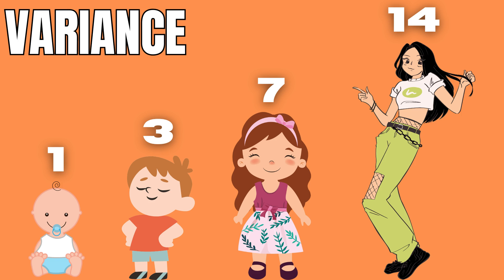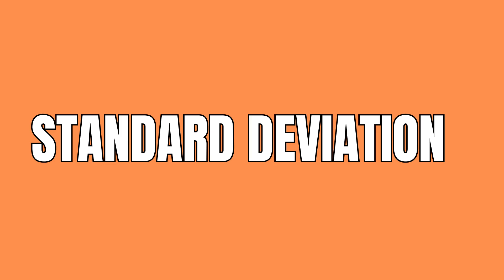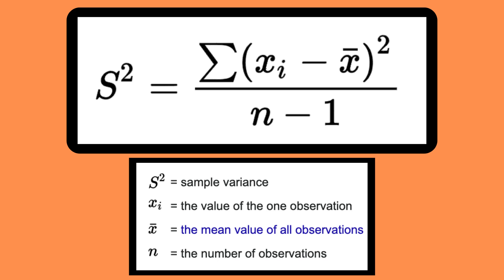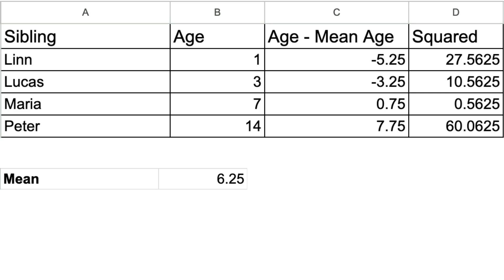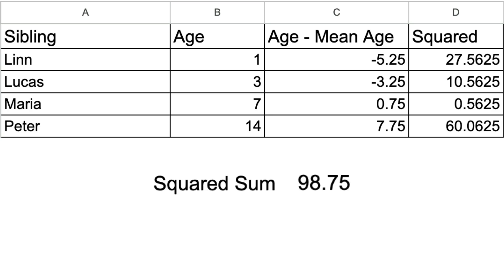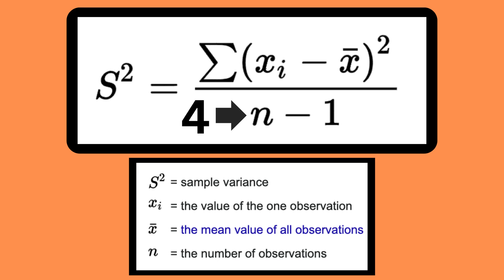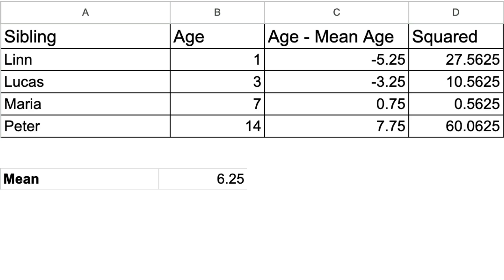Now we need to calculate the variance in age of the siblings, as the variance is the standard deviation squared. The variance is calculated by subtracting the mean age from the age of each child and squaring that difference. All these squared age differences are then summed together and divided by the total number of siblings minus 1, which gives us a variance of 32.92 years.